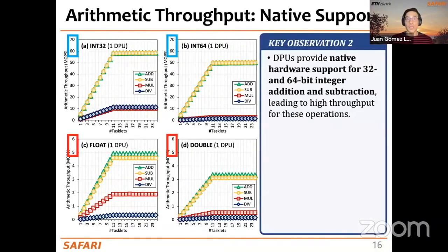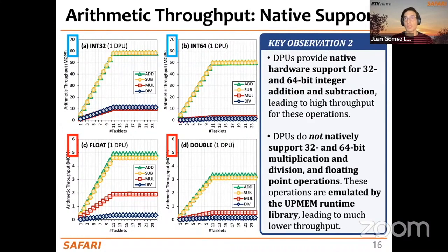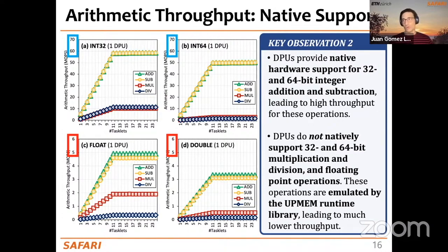The problem is that multiplication and division of 32-bit integers may take up to 32 instructions, causing the large throughput difference. Similarly, there is a large throughput difference between integers and floating point — the DPUs don't support floating point operands in hardware, and these operations are emulated by the runtime library, leading to much lower throughput.